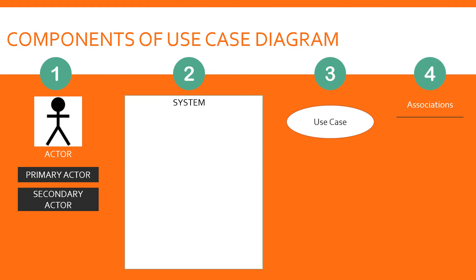Component number four: associations are the relationships between the actors and the use cases, indicated by a straight line. There is also another type of relationship — between use cases — and there are two types: include and extend, indicated by a dotted line with the words 'include' or 'extend' written on them. An include use case is invoked every time the base use case is invoked by the actor. It is separated out so that it can be shared by other use cases — for example, shared functionality required by several use cases. An extend use case represents an alternate flow and is only triggered under certain conditions.